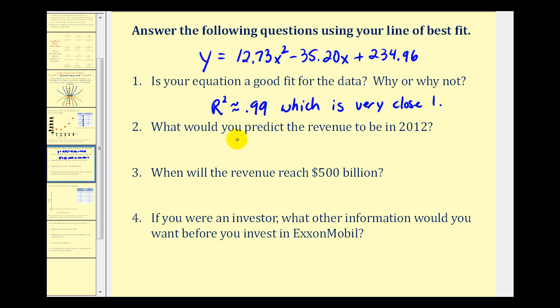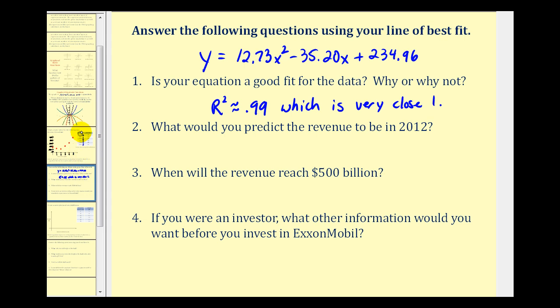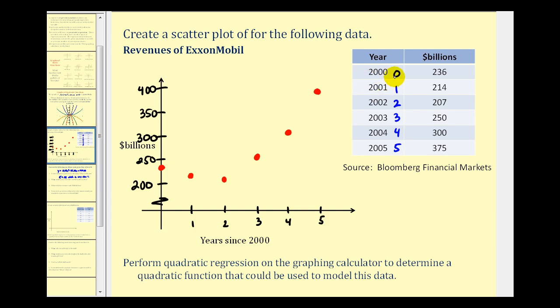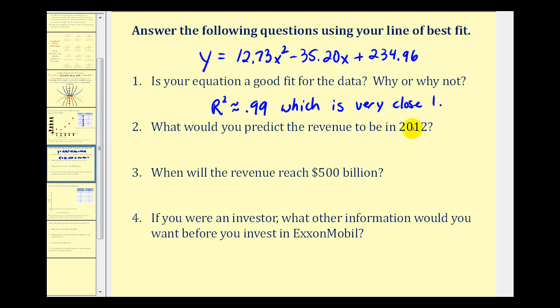Number two, we want to predict the revenue in the year 2012. We need to be a little bit careful here, because remember if we go back to our data, the year 2000 was represented by x equals zero. So for the year 2012, that would be x equals 12.